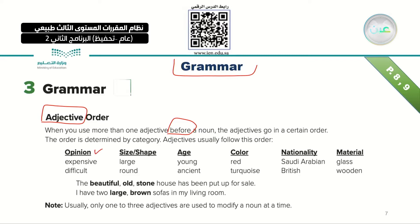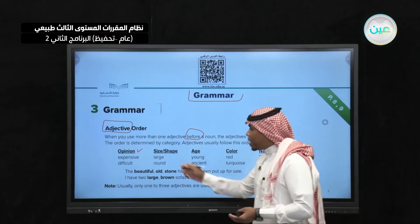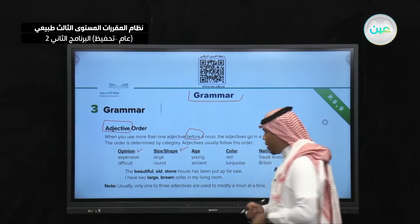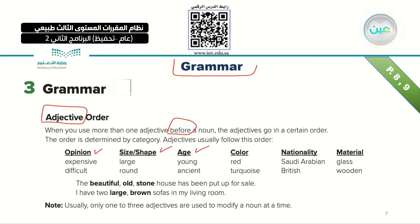The order is: first, opinion — for example, difficult, beautiful, expensive. Then size and shape — large, small. Then age — young, ancient, old. Then color — red, blue, purple. Then nationality — British, and so on. And finally, material — glass, wooden. This is how you order adjectives in a sentence.